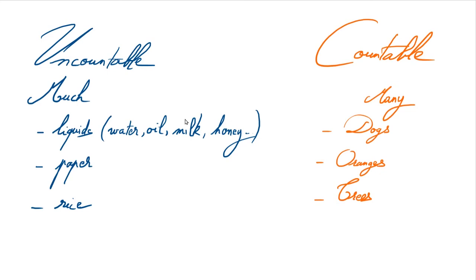Uncountable means indénombrables — les choses qu'on ne peut pas compter — so these are nouns with no plural form; you don't add an S, for example. Countable nouns, on the other hand, can take a plural form by adding an S, like DOG → DOGS, ORANGE → ORANGES, TREE → TREES.